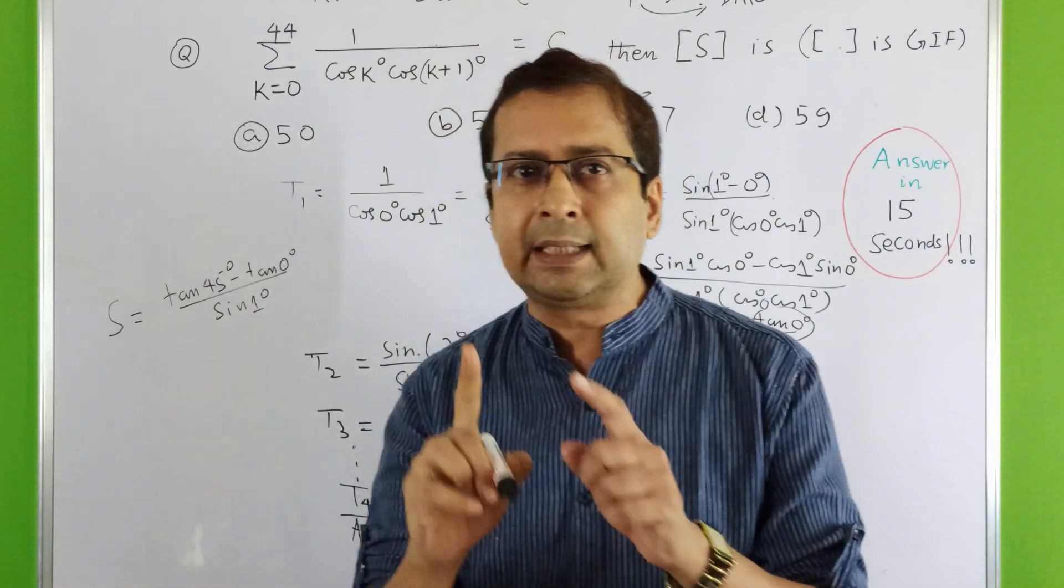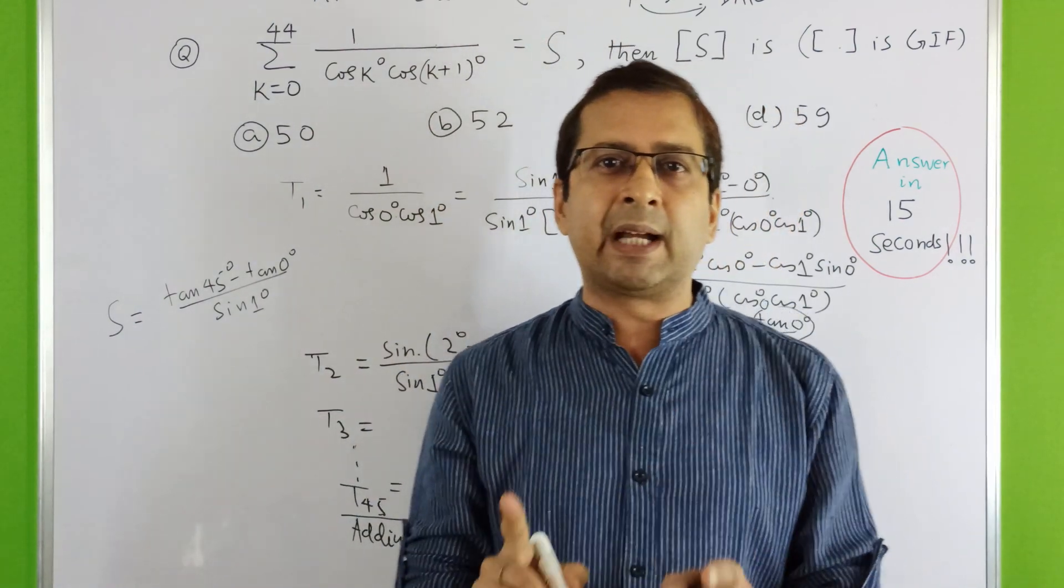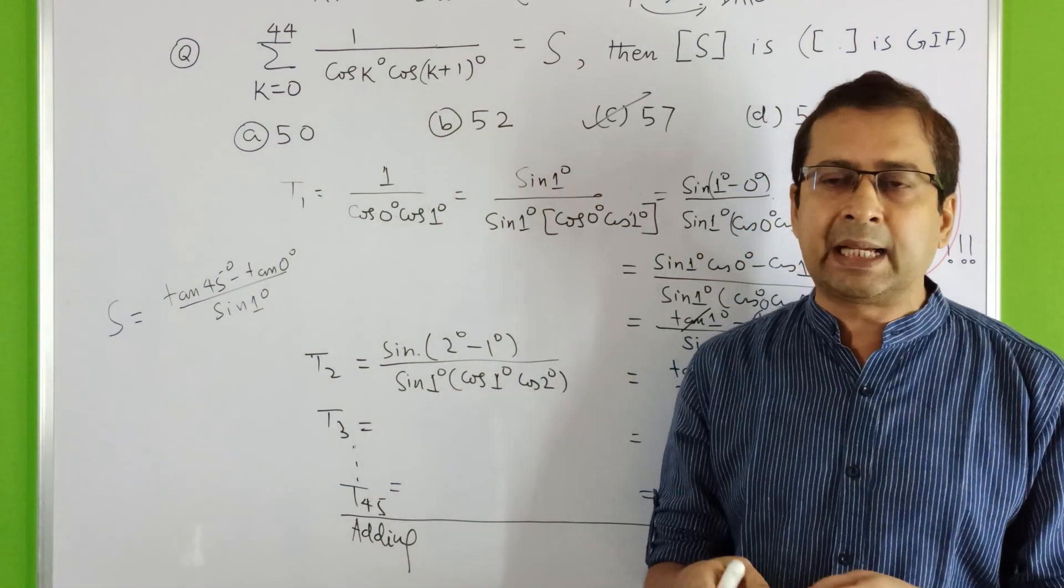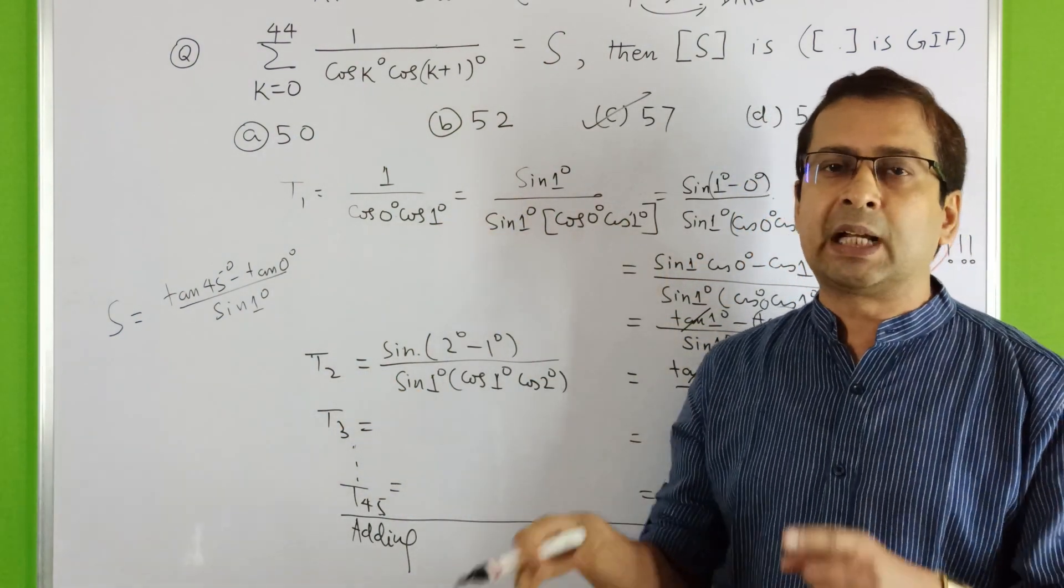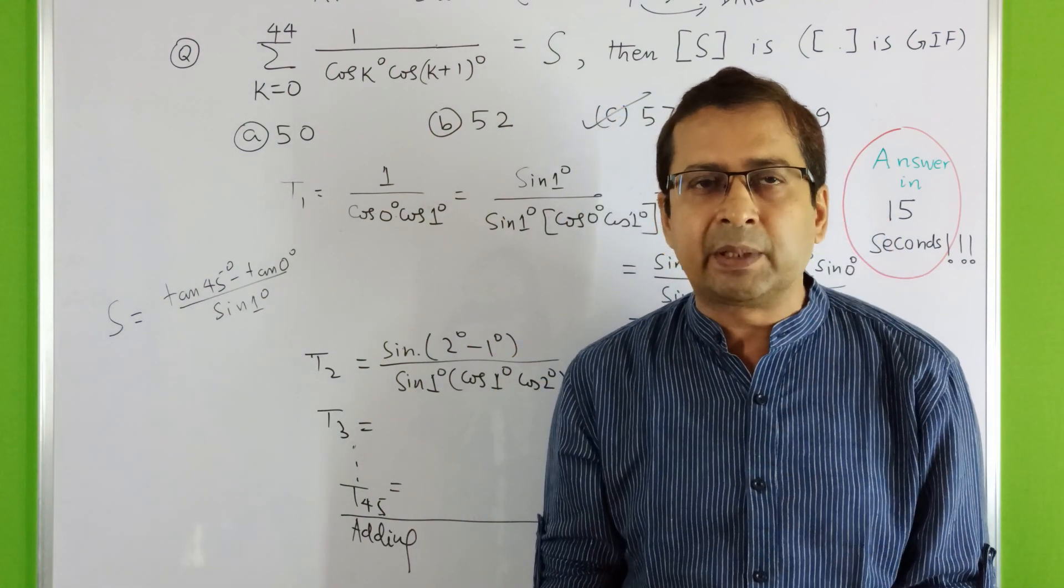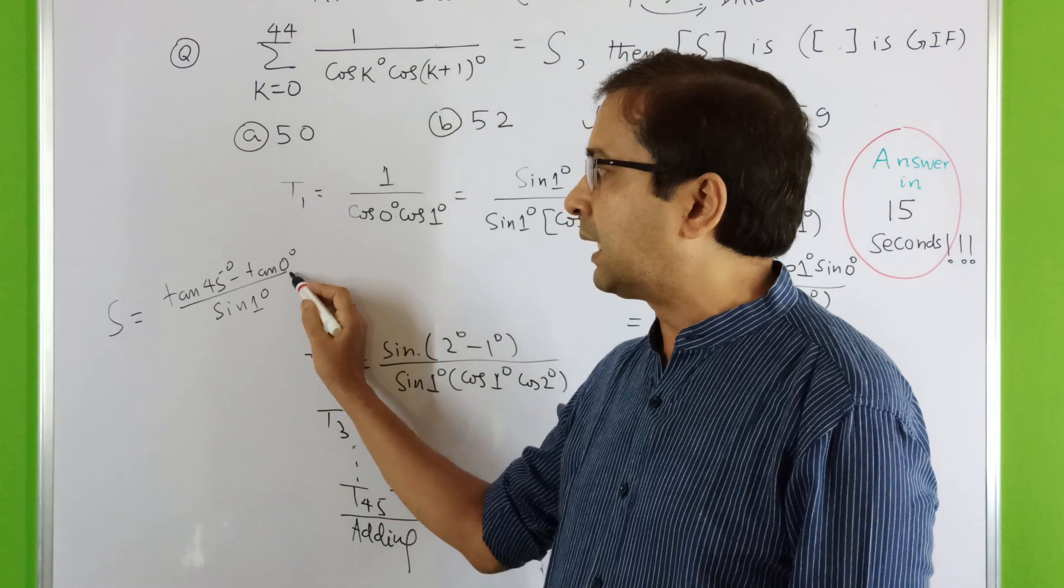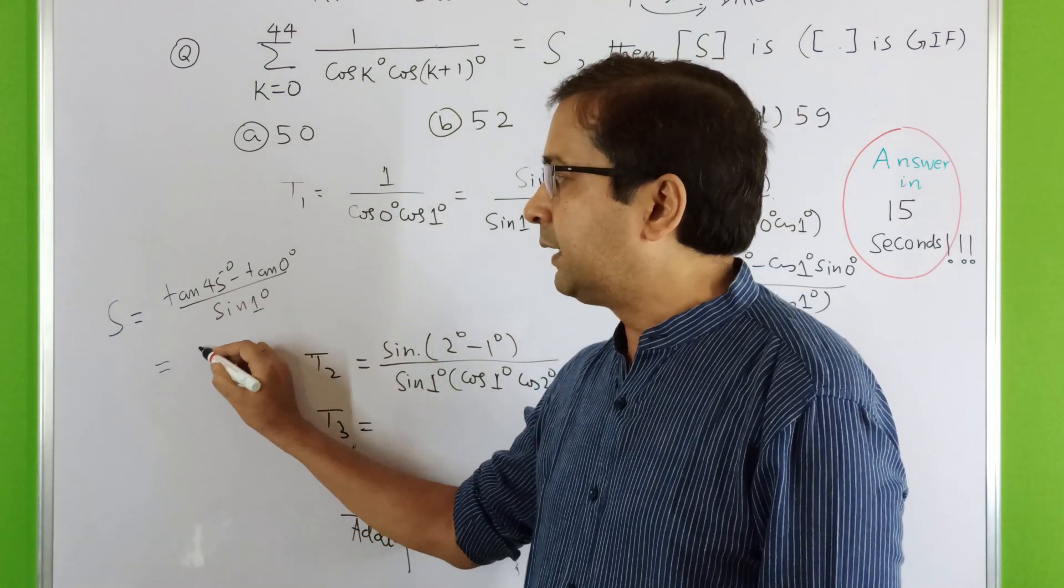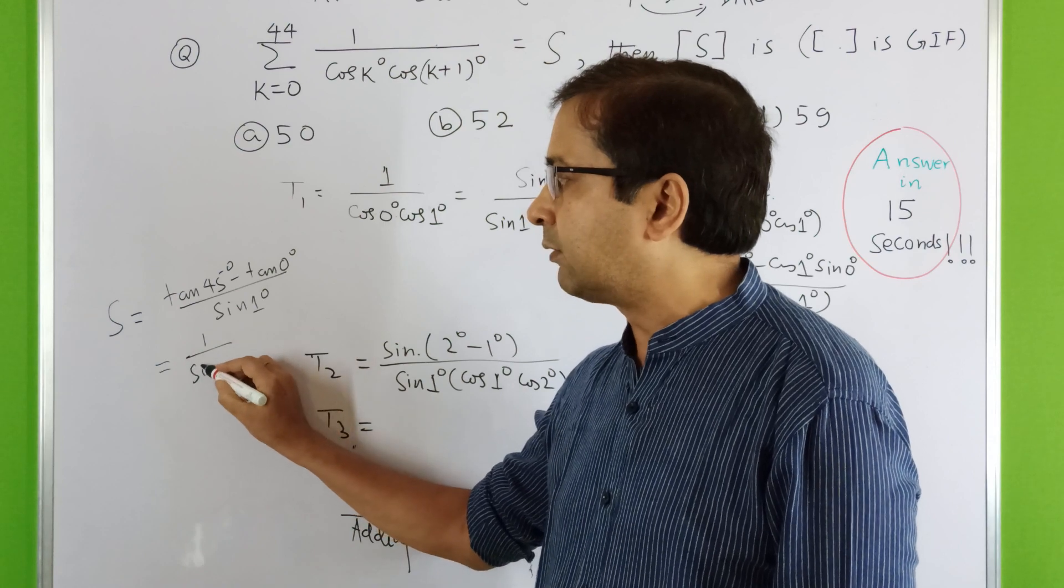Don't forget, we multiply and divide by sin 1 degree. This concept keep in mind - whatever you multiply and divide by, all terms will have that factor. Now see, tan 0 is what? Zero. Tan 45 is what? One. So we have this is 1 by sin 1 degree.